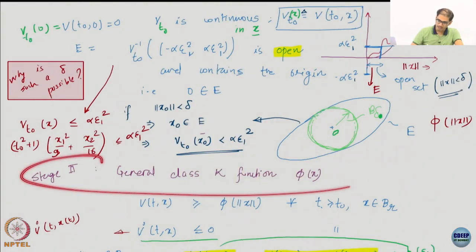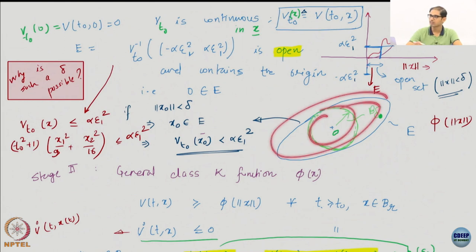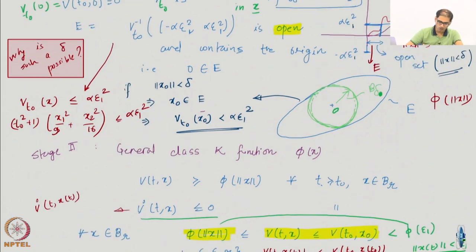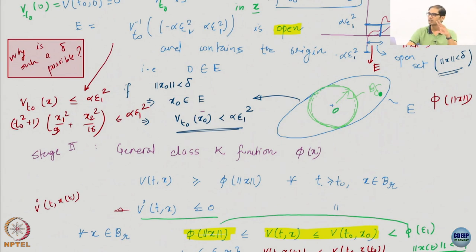Stage 2: now we go to the general class K function. Nothing much changes, you already have this stuff, so this is going to help you anyway. But now all this α·ε² term cannot happen — I hope that is evident — because α·ε₁² came because I assumed α‖x‖² as my class K function; that cannot happen.